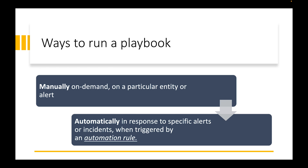With automation and playbooks, it says: this is what I want done — I want these three steps done. I want the account removed, I want it disabled, I also want to have an email generated and sent to the managers to let them know exactly what's going on. Or you could reset a password. That is the powerfulness of automation rules.